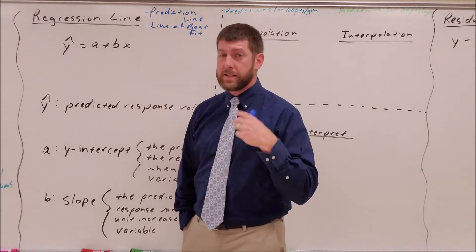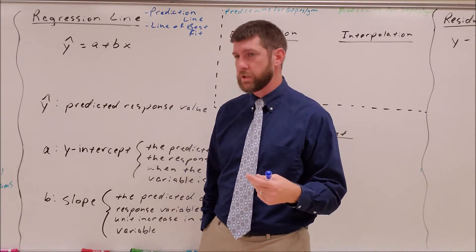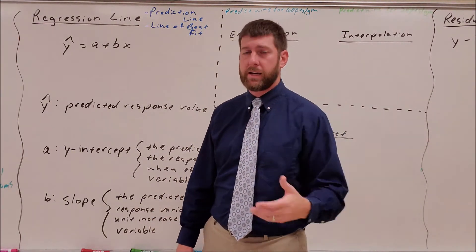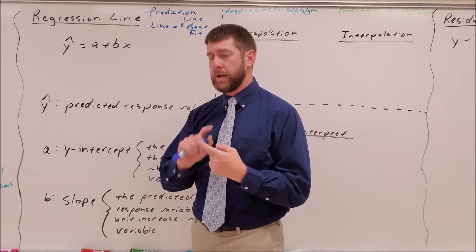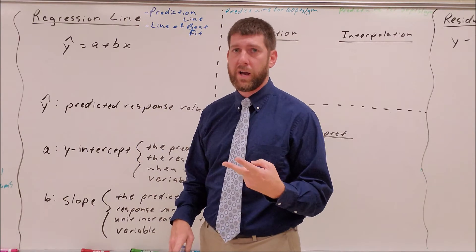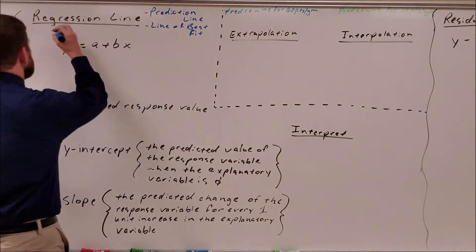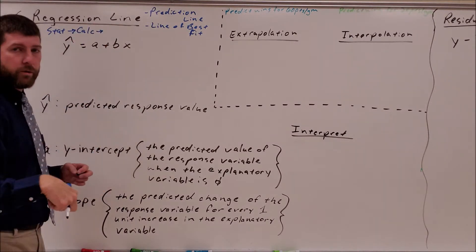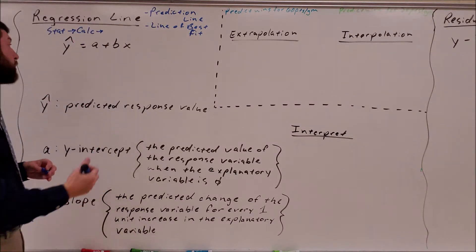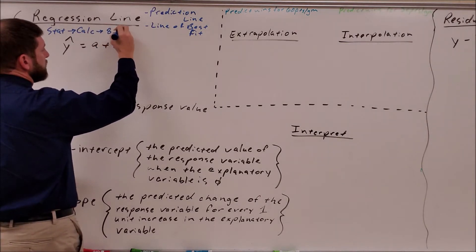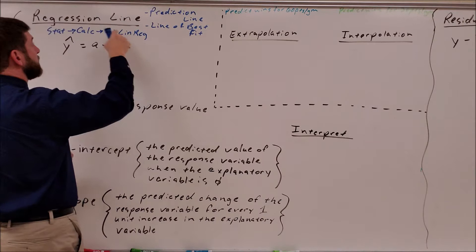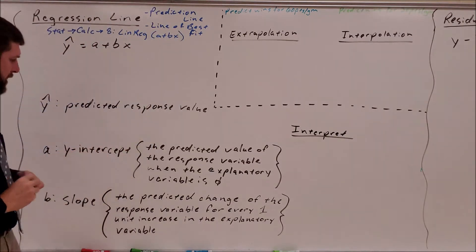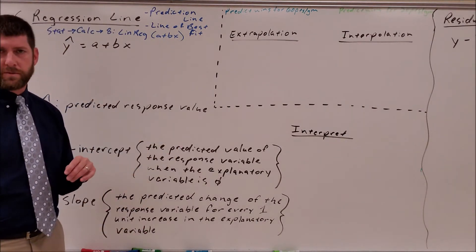Calculating the regression line uses the same process as the correlation coefficient. Go into the calculator with your X variable in L1 and Y variable in L2, then hit STAT, CALC, and choose Option 8, which is LinReg A plus BX. Let's jump into the calculator and walk through those steps.